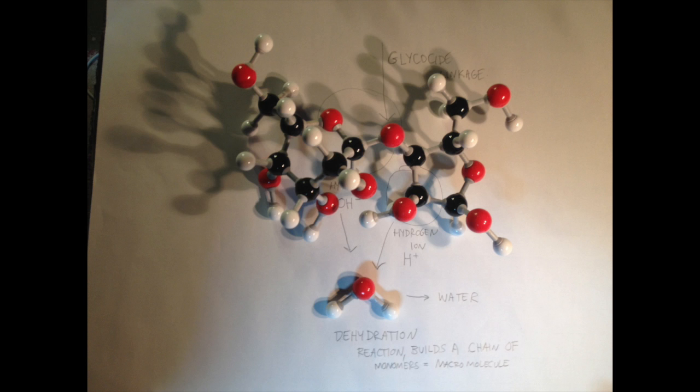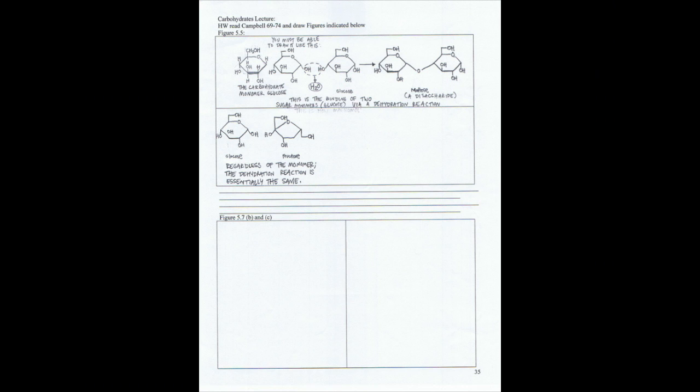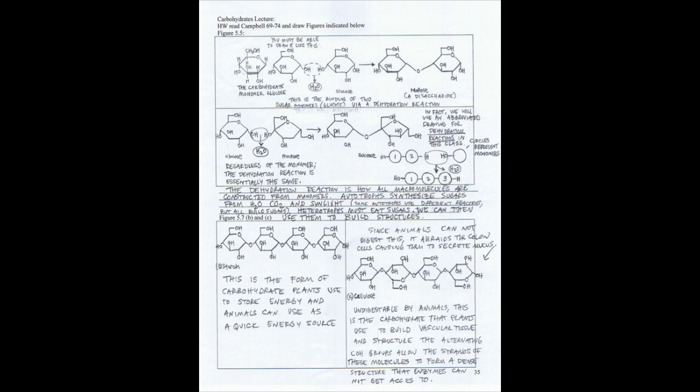In fact, we're going to use an abbreviated drawing for a dehydration reaction in this class. The circles here represent monomers, and this shows the formation of a macromolecule from three monomers.